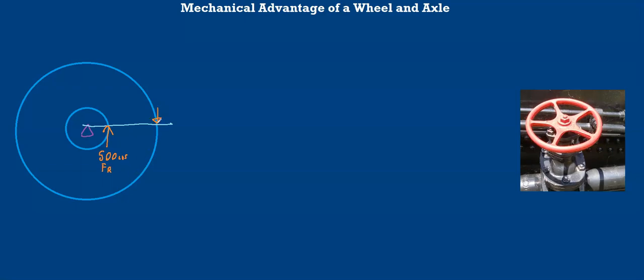And let's say we don't know what the effort force would be. But the radius of our wheel, so from one end to the other, so we say from the center to the edge of our wheel is 9 inches. And the radius of our axle is 4 inches.